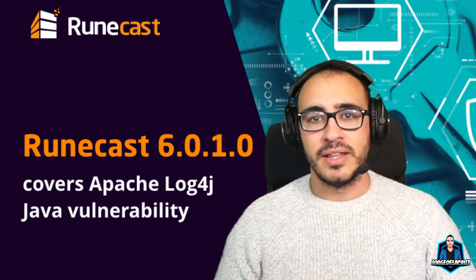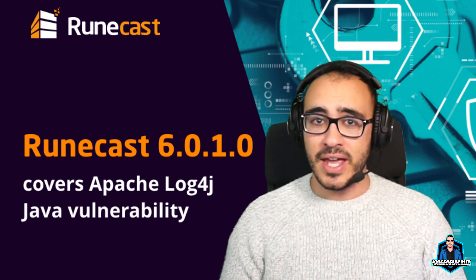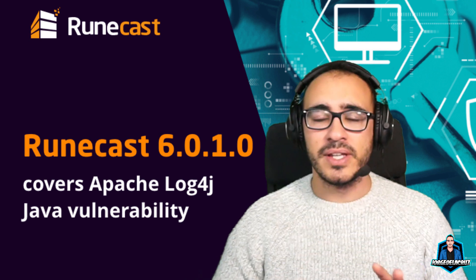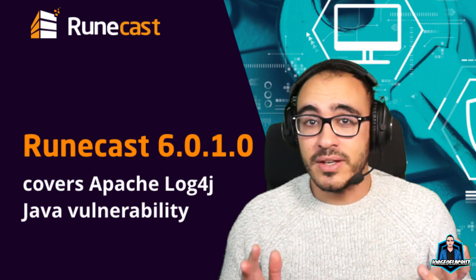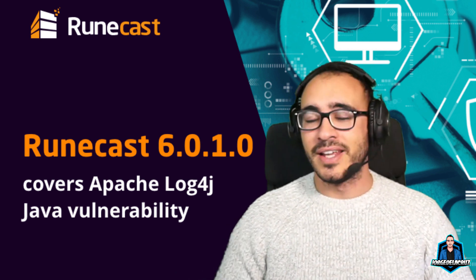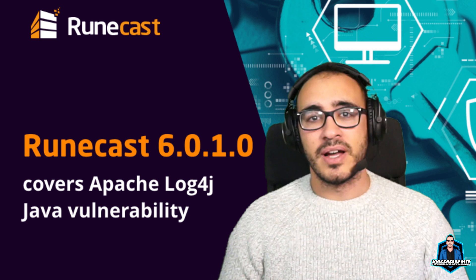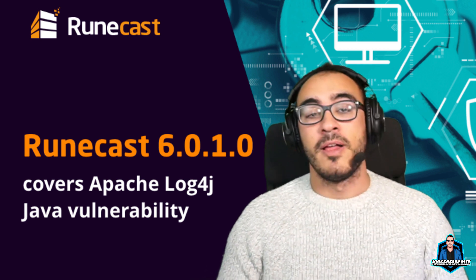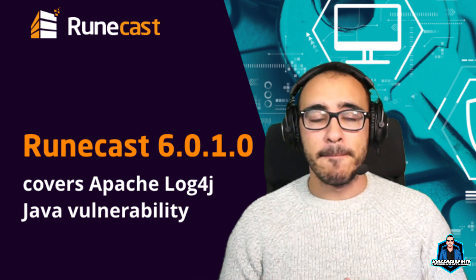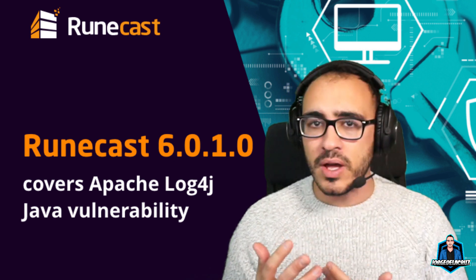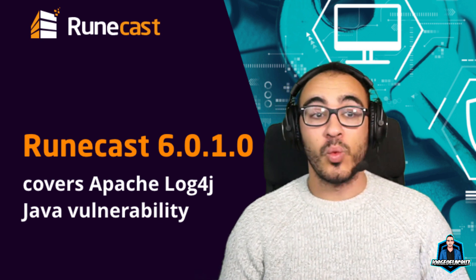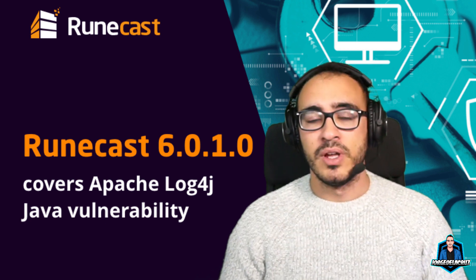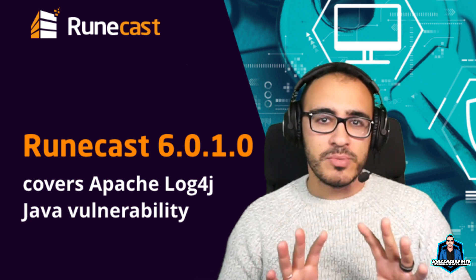Then Log4Shell came, and that vulnerability is really, really bad. It has a CVSS score of 10 out of 10 — the maximum you can get — and it affects a lot of vendors. I'm recording this video today talking about VMware specifically: how to do the workaround, how to fix it for now, and how we can detect it.